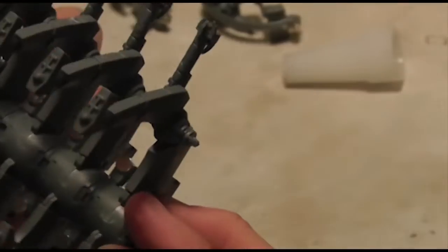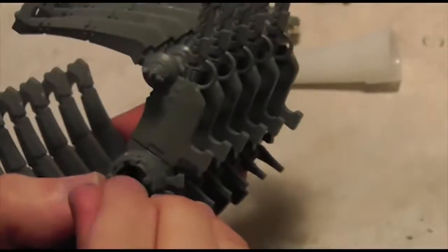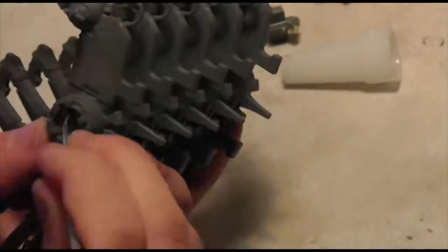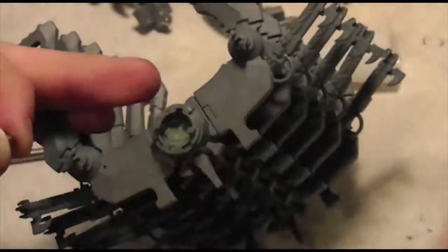I move on to magnetizing the connection for the rib cage. I start off by putting green stuff into the tube, since it's hollow. Then I glue in a ¼ inch by 1/8 inch magnet while it's still moldable and squish it in very gently.